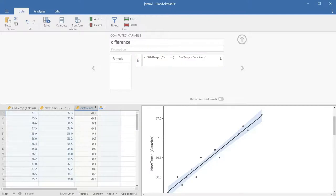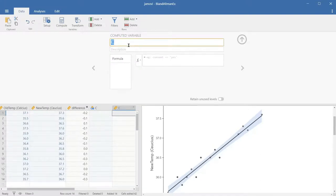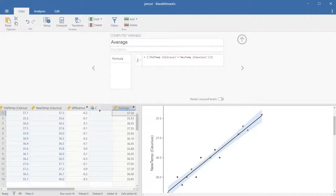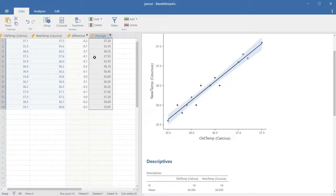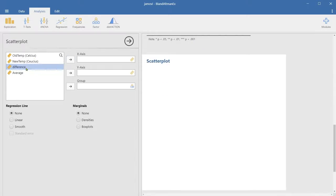This way, we can calculate the difference easily. And the average, we need another compute variable. You just add them up and divide by two. That way, you calculate the average column. Now, if you do the scatterplot between these two, difference goes to the y-axis and the average goes to the x-axis.